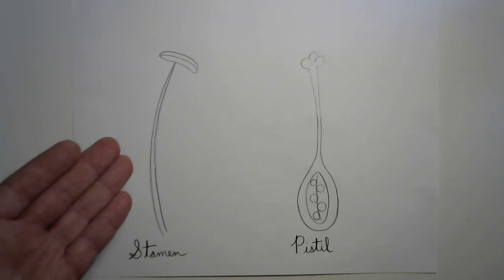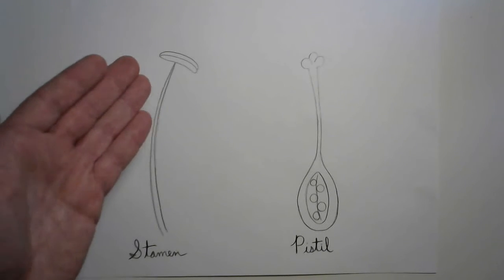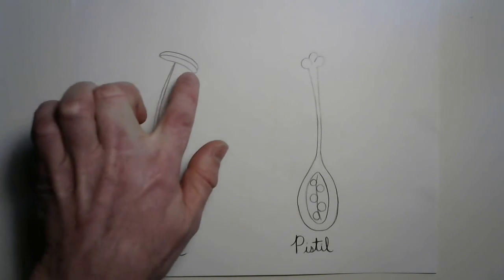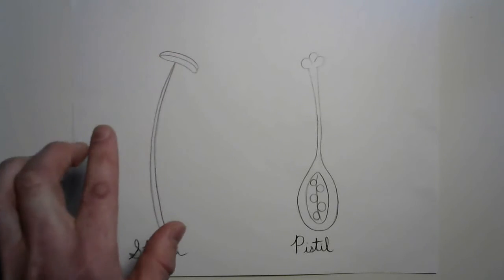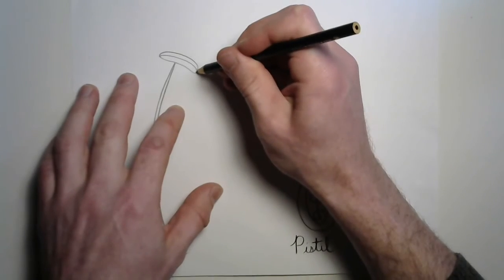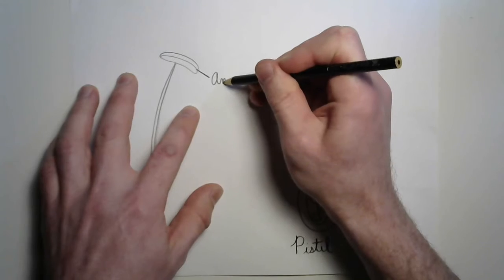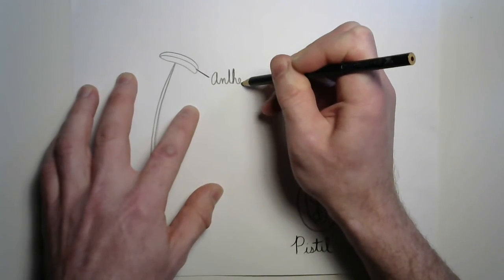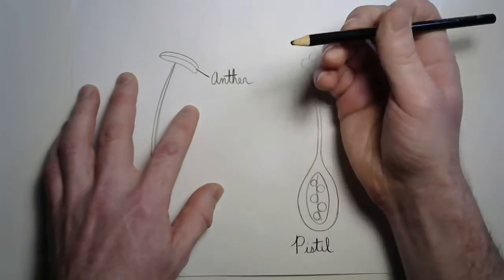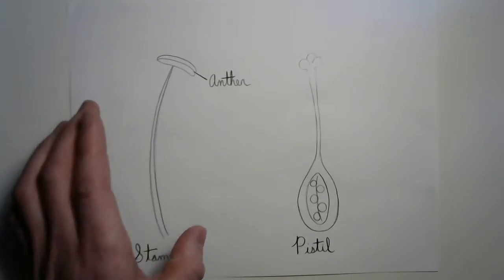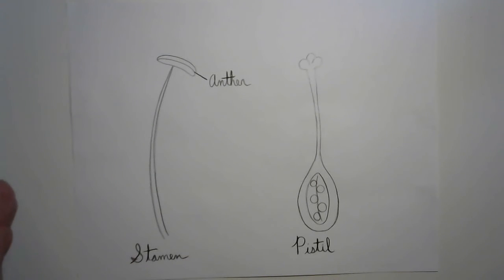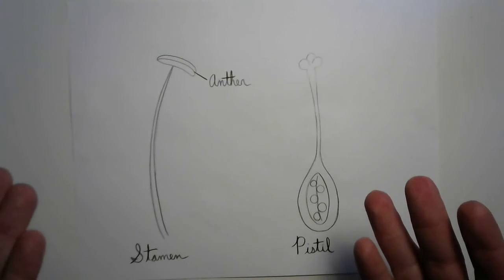The stamen is responsible for creating the pollen, and all of the pollen is released from what looks like a strange little bean at the top. That is called the anther. Anther comes from the word anthos, which is Greek for flower. Pretty cool, right?